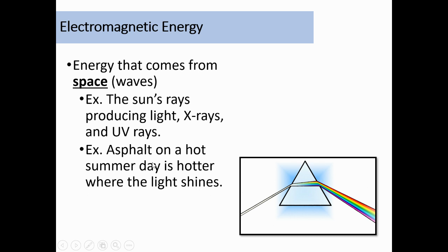Alright. Electromagnetic energy. This one I think is pretty nifty because I don't think a lot of people, especially at your guys' level, kind of really think about this, but we have energy that comes from space. So the sun rays, producing light, x-rays if you ever got an x-ray done, UV rays if you ever got a sunburn, all that stuff. So the asphalt, like the ground in the parking lot on a hot summer day is hotter when the light shines. And that's because all this energy from space is causing that asphalt to heat up.